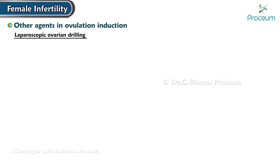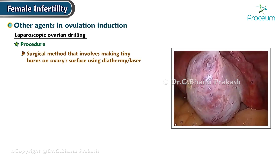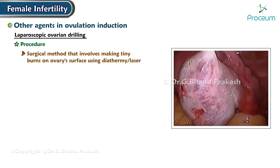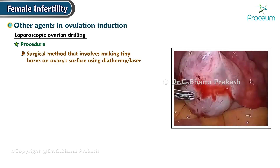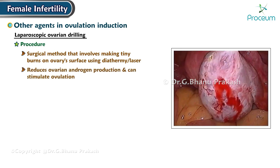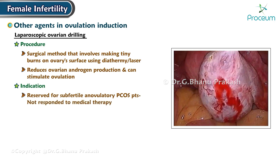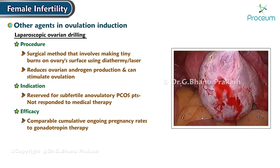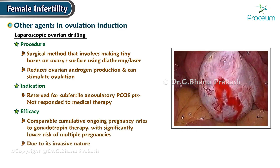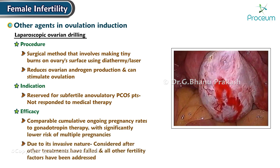Next is laparoscopic ovarian drilling. Procedure: Laparoscopic ovarian drilling is a surgical method that involves making tiny burns on the ovary surface using diathermy or laser. This technique reduces ovarian androgen production and can stimulate ovulation. Indication: This procedure is reserved for subfertile anovulatory polycystic ovarian syndrome patients who have not responded to medical therapy. Efficacy: It has comparable cumulative ongoing pregnancy rates to gonadotropin therapy, but with a significantly lower risk of multiple pregnancies. However, due to its invasive nature, it's considered only after other treatments have failed and all other fertility factors have been addressed.